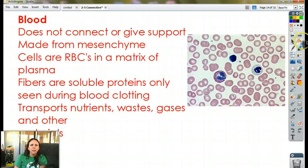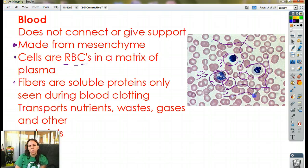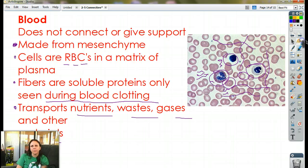Okay, and the last one, blood. Doesn't give any support, doesn't connect anything, but it does transport, definitely. And because it's made from mesenchyme, that means it's under the connective tissue umbrella. The cells are made out of RBCs, or red blood cells, and a matrix of plasma. So all this stuff around here, that's the matrix, that's all plasma. And then here's the cells. We've got red blood cells that look like Cheerios, we've got white blood cells. There's five different types of white blood cells, we'll talk about those later. The fibers, as you can see, there's no lines of fibers like in the other ones. They are there, you just can't see them. They're soluble until you hurt yourself, and then all of a sudden, they reappear. And then that's what clots your blood together and clots everything together to make a scab. Blood's job: transport nutrients, waste, gases, and any other material it can think of.